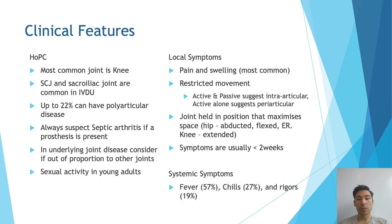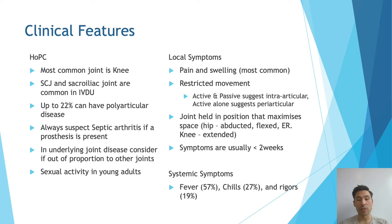The features that you look for in someone with septic arthritis: the most common joint is the knee joint, and other things to think about are the sternoclavicular joint or the sacroiliac joint in IV drug users. Up to 22% of people can also have polyarticular disease, so it may not just be one single joint. You should always suspect septic arthritis if a prosthesis is present, and in underlying joint disease, consider it when pain is out of proportion with their usual symptoms. In someone young, you need to consider unprotected intercourse. You'd expect to see a painful swollen joint that is painful on both passive and active movement, not just active alone.